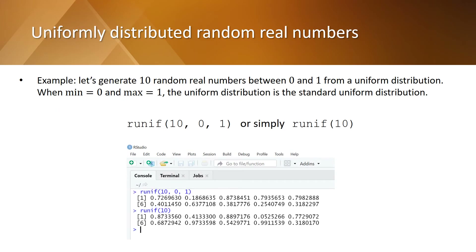Let's generate 10 random real numbers between 0 and 1 from a uniform distribution. When the minimum value is equal to 0 and the maximum value is equal to 1, this is a standard uniform distribution. Use the runif command and give the sample size of 10, the minimum value 0, and the maximum value 1. You can simply write runif(10) and the software knows by default it will be from a standard uniform distribution. Look at the results of these two commands in the RStudio print screen.